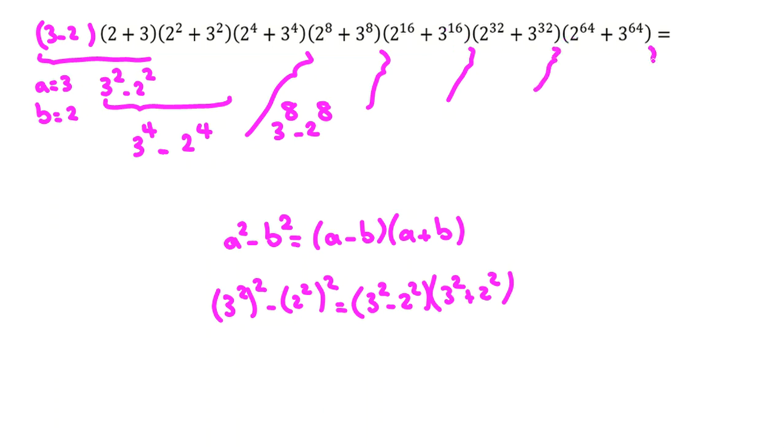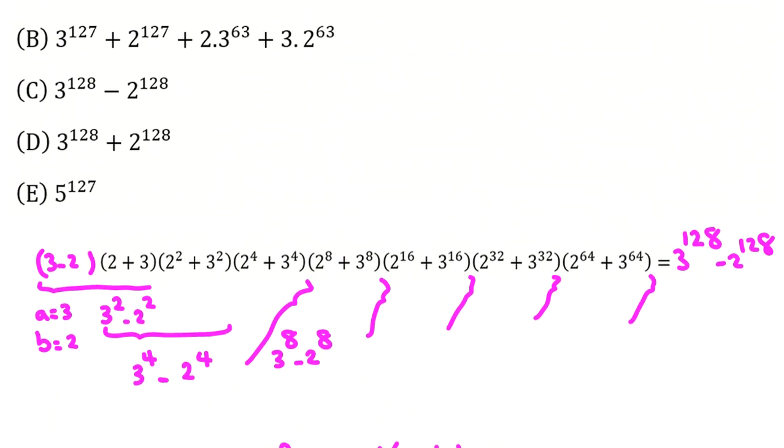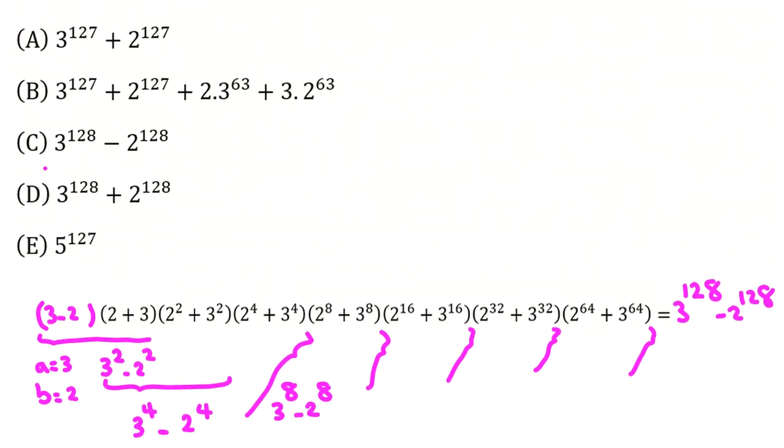3⁶⁴ - 2⁶⁴, and this final part will be 3¹²⁸ - 2¹²⁸. So if we check, the answer will be C.